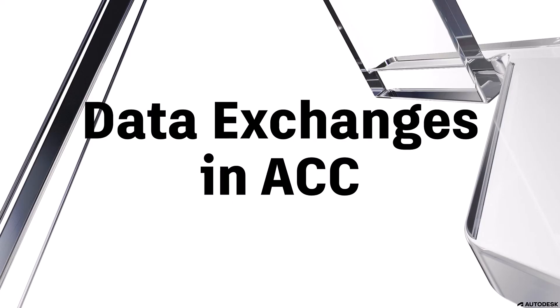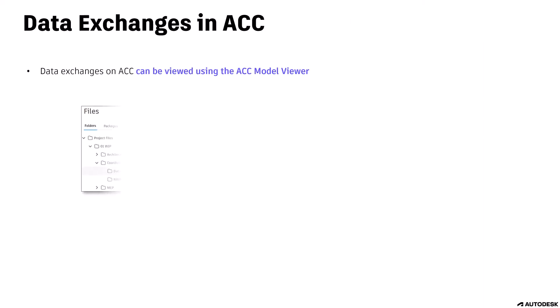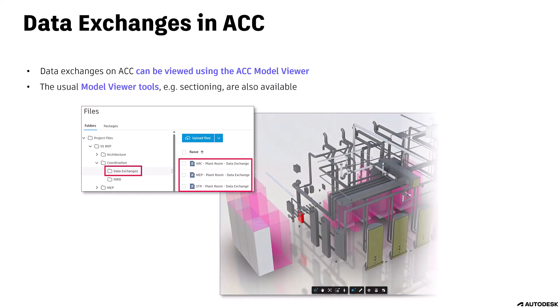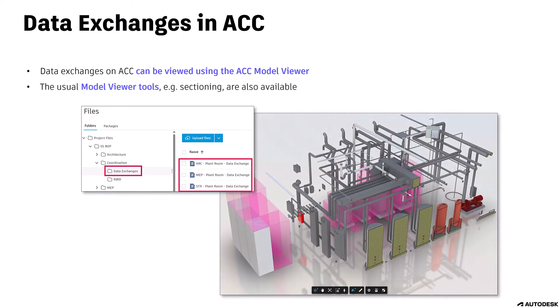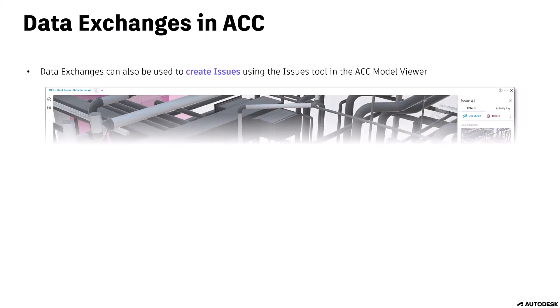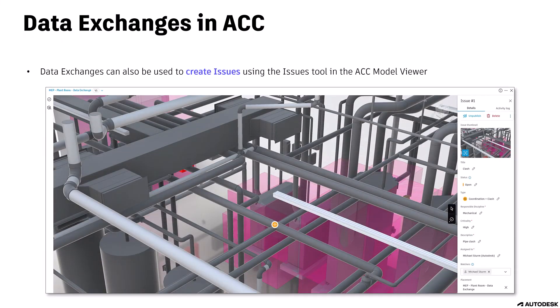Data exchanges saved to ACC can be viewed using the ACC Model Viewer. The usual Model Viewer tools — for example, sectioning — are also available. Data exchanges can also be used to create issues using the Issues tool in the ACC Model Viewer.